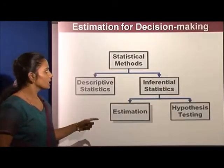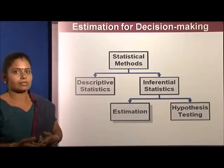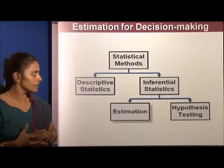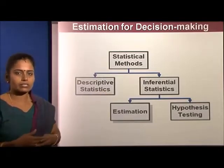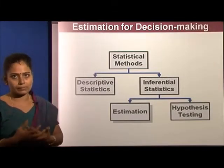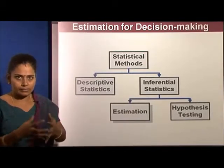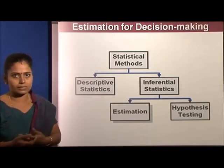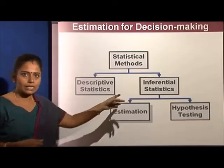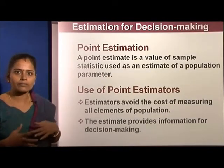Statistical methods are of two types. Descriptive statistics — explained in initial chapters — includes mean, median, mode, and so on, describing business happenings. Inferential statistics involves selecting and collecting samples and drawing inferences from them. Inferential statistics is mainly of two types: estimation, where we estimate and forecast from samples, and hypothesis testing. Both play an important role in inferential statistics.